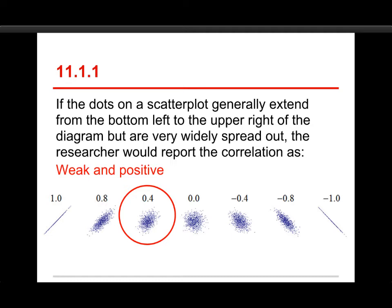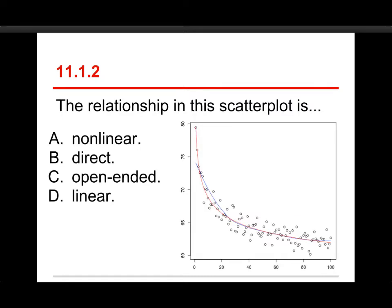But it is weak because you see it's not nearly as pronounced as the 0.8. That's a weak and positive correlation right there. Number two, the relationship in this scatterplot is A, non-linear; B, direct; C, open-ended; or D, linear.